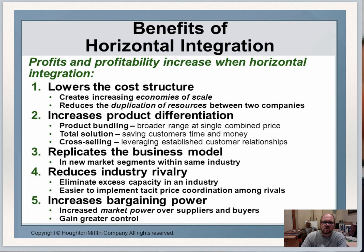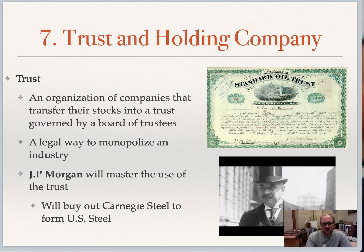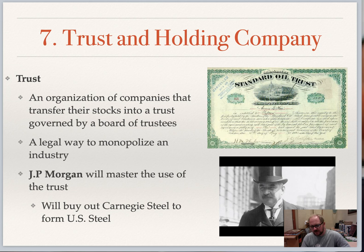The benefits of horizontal integration include lowering costs, increasing product differentiation, reducing industrial rivalry's ability to compete, and having huge bargaining power among transportation networks. Rockefeller was able to form a trust, which is basically a legal way to monopolize a company. The master of forming trusts was JP Morgan, a banker who bought up companies and put them together into mega companies. He'll actually buy Andrew Carnegie's steel company and eventually form the largest US company ever built in that time period: US Steel.